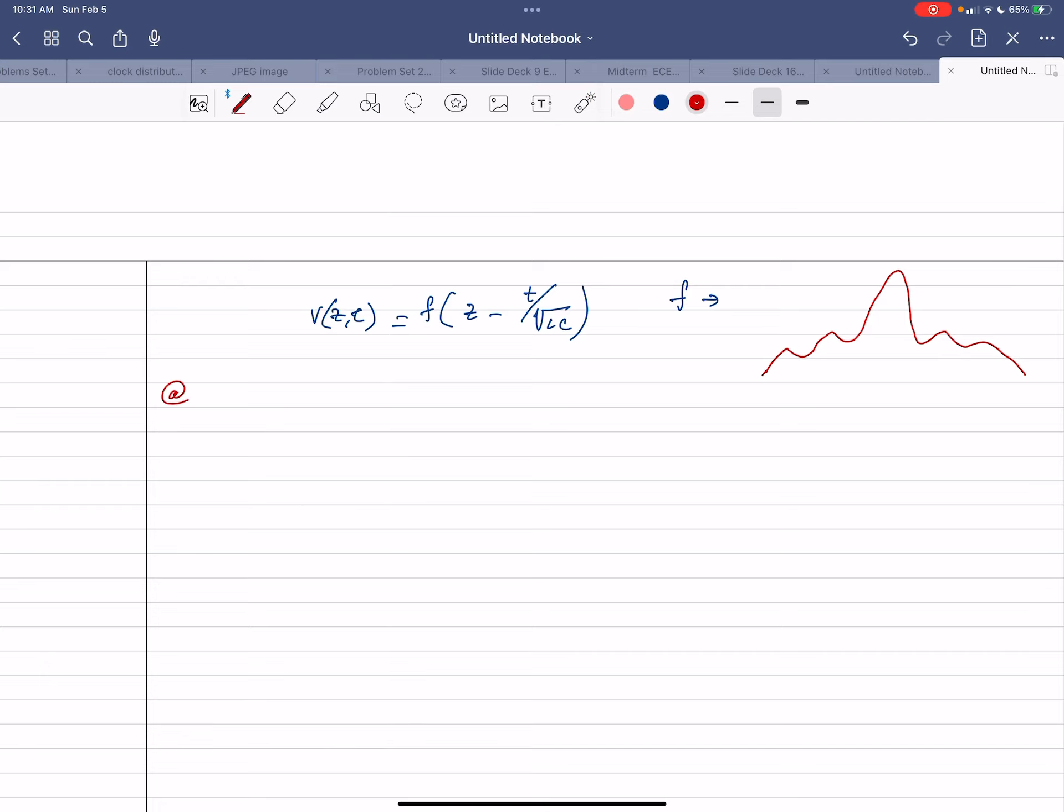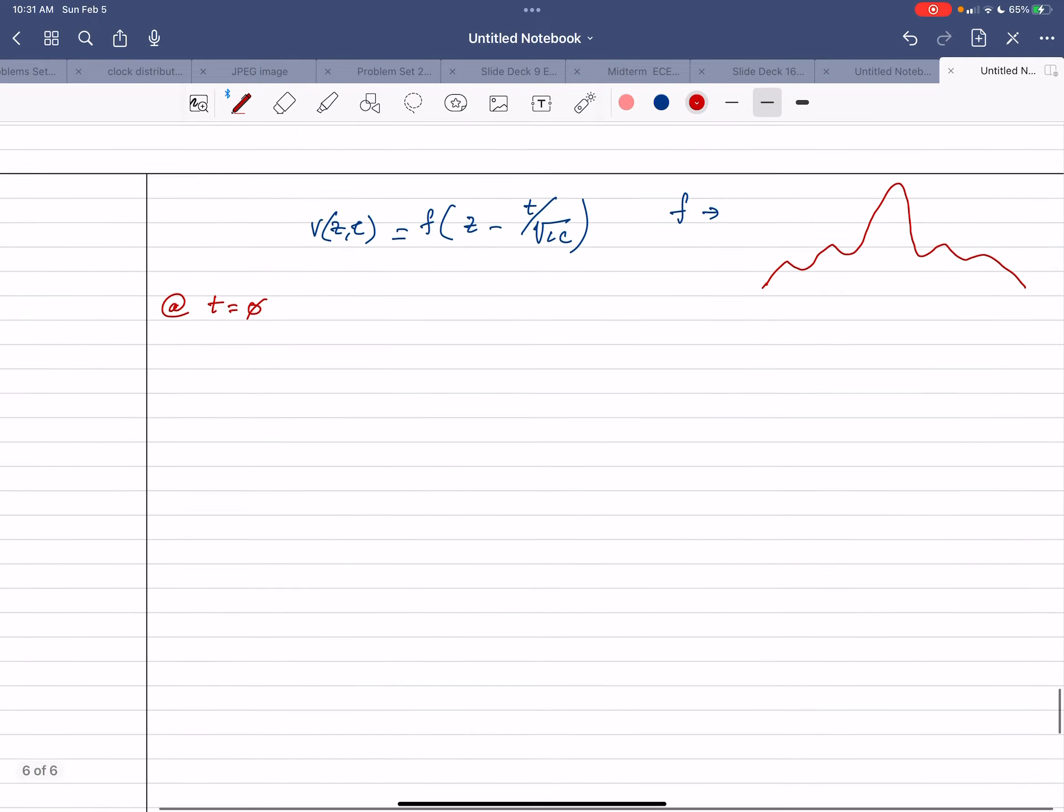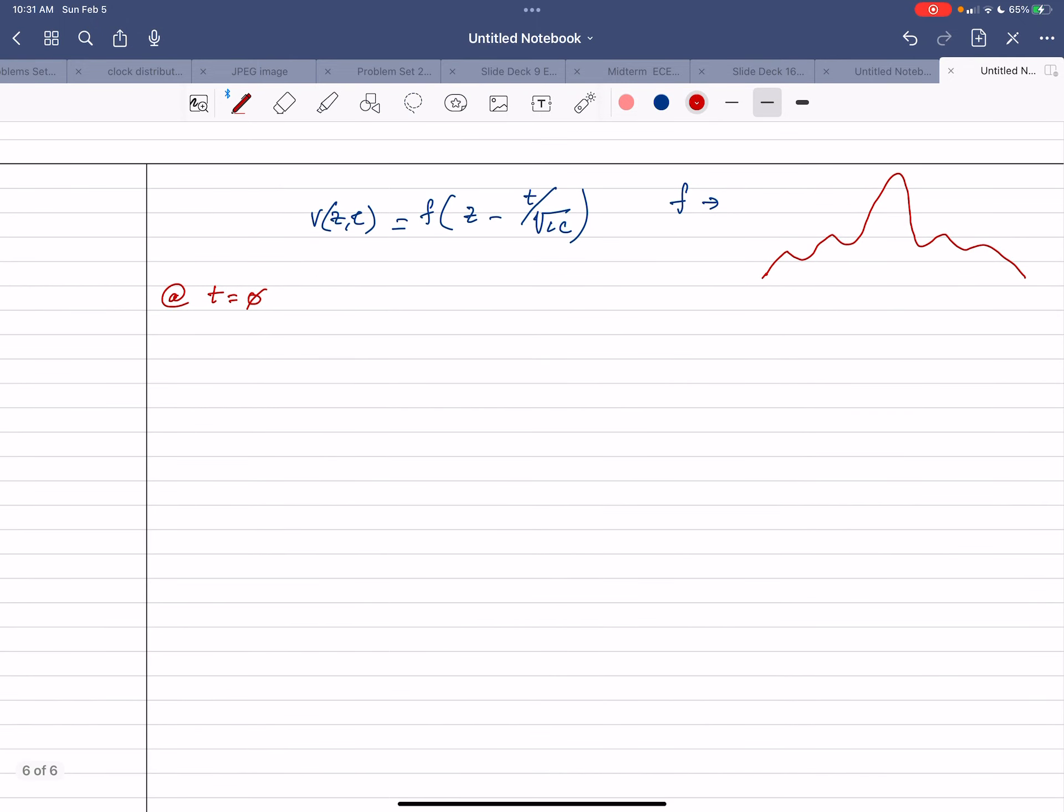So at time is equal to zero, and if I draw the transmission line, at time is equal to zero, notice if I plug in t equal to zero here, I'm just going to get f of z. And let's say this is z, this is z equal to zero.